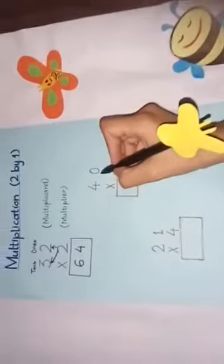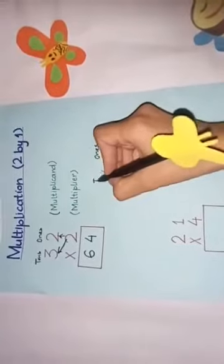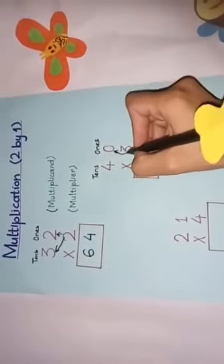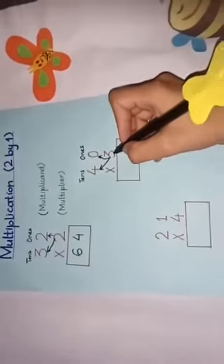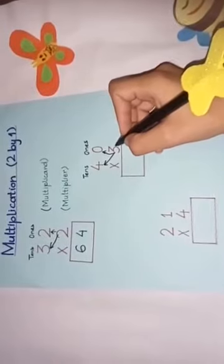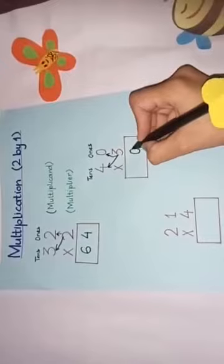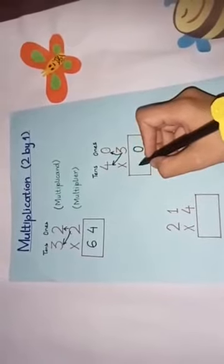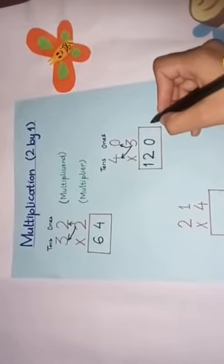Now it is also a 2-digit number. The first one is 1s and the second one is 10s. Now you will multiply 3 with 0 first and 3 with 4 secondly. What will we get after multiplying 3 with 0? We get 0 — very good, 3 zeros are 0. And now 3 fours are 12, so 120 is your answer.